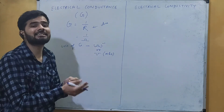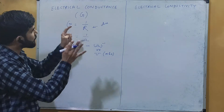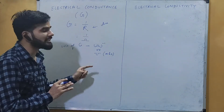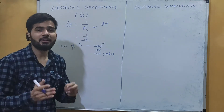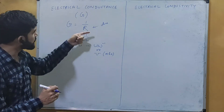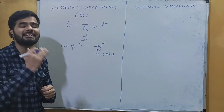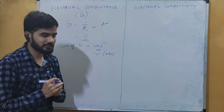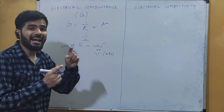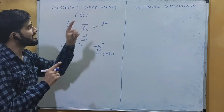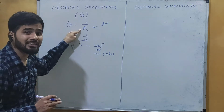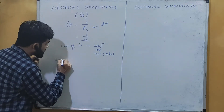The symbol for mho is also the reversed ohm symbol — consistent with the reciprocal relationship. Now we need to find the dimensional formula of conductance. Since conductance is the reciprocal of resistance, we will first derive the dimensional formula of resistance and then write the dimensional formula for conductance.